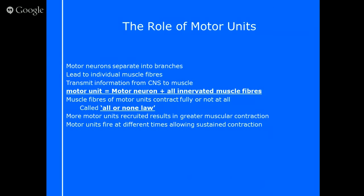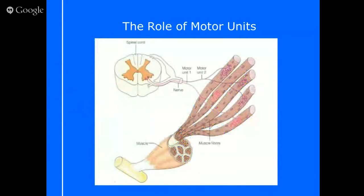Here's a diagram of motor units. You can see the spinal cord at the top in the middle, breaking down into several motor neurons. One motor unit branches off into three muscle fibres, whereas another motor unit here is branched off into two muscle fibres. It's a really clear way of seeing how motor units integrate within the muscle.